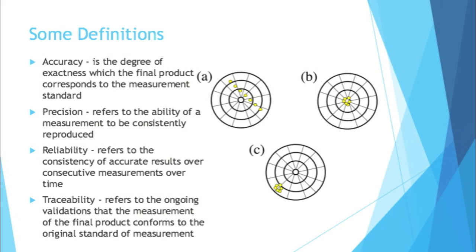Here are some definitions you might come across when talking about metrology. Accuracy is the degree of exactness to which the final product corresponds to the measurement standard. Precision refers to the ability of a measurement to be consistently reproduced — precision is not accuracy; it's whether you can land in the same area of measurement again and again. People mix up precision and accuracy quite a bit in the real world. Reliability refers to the consistency of accurate results over consecutive measurements over time. Traceability refers to the ongoing validation that the measurement of the final product conforms to the original standard of measurement — it all goes back to that single agreed-upon standard.